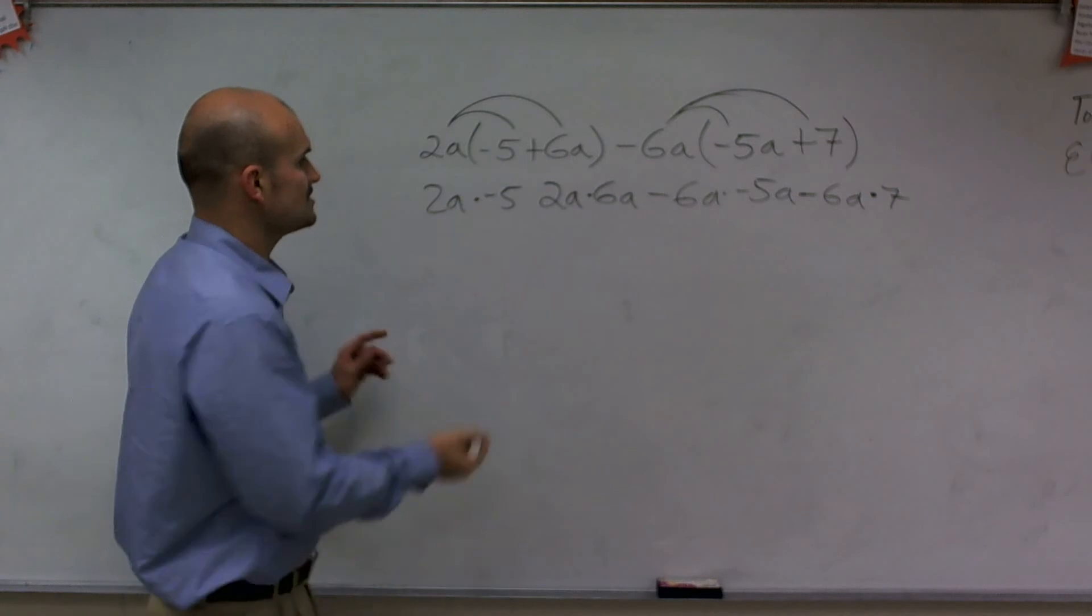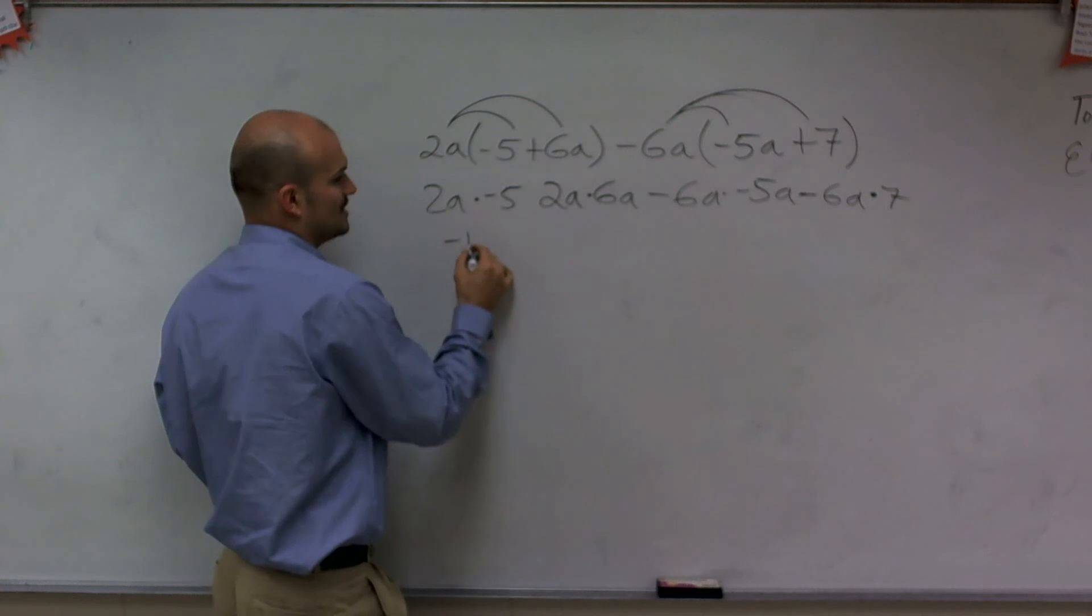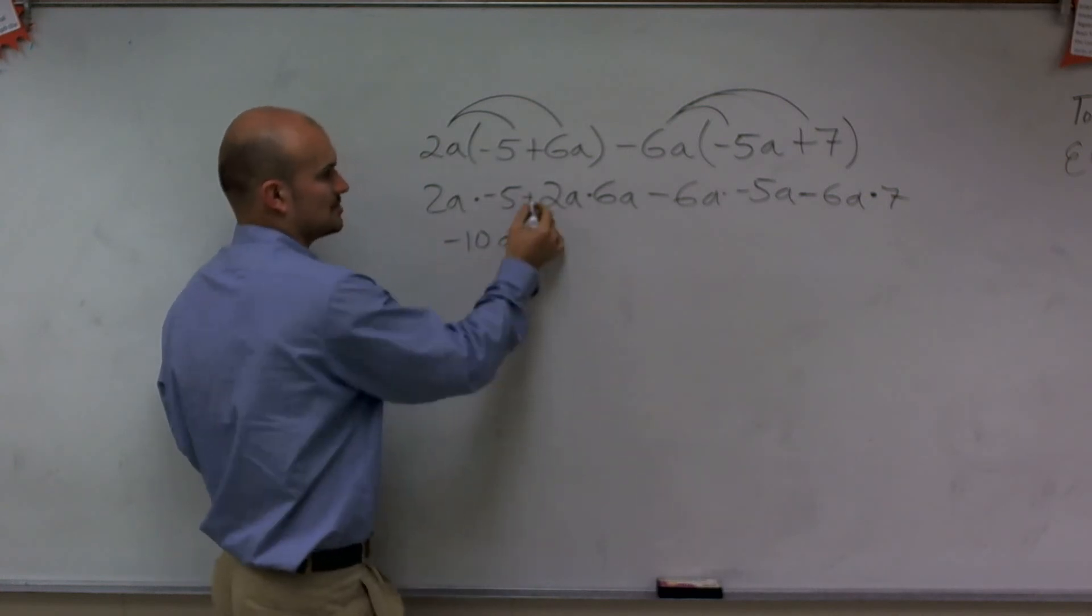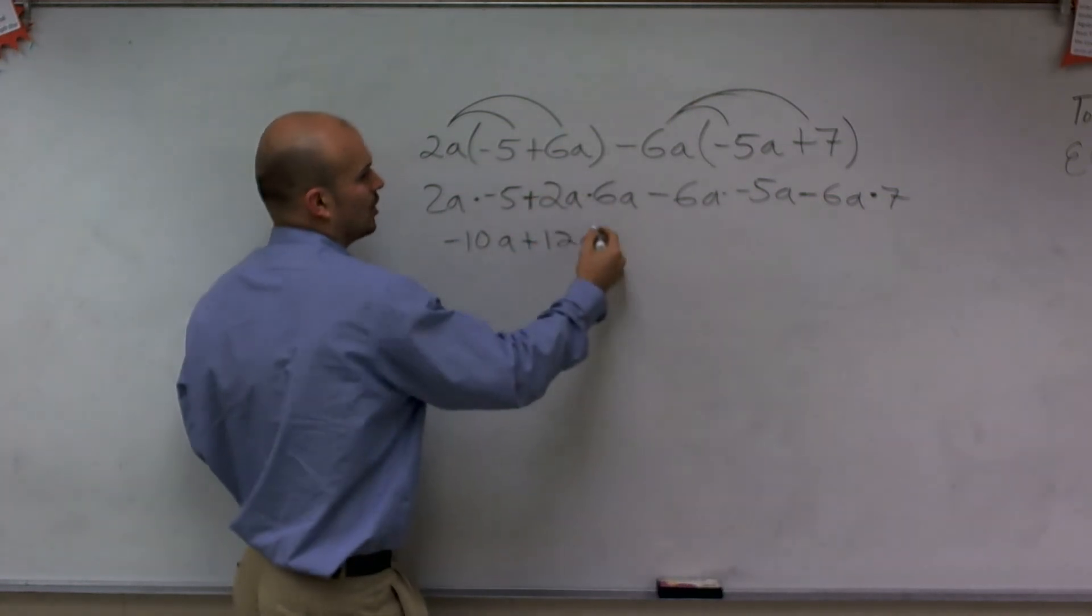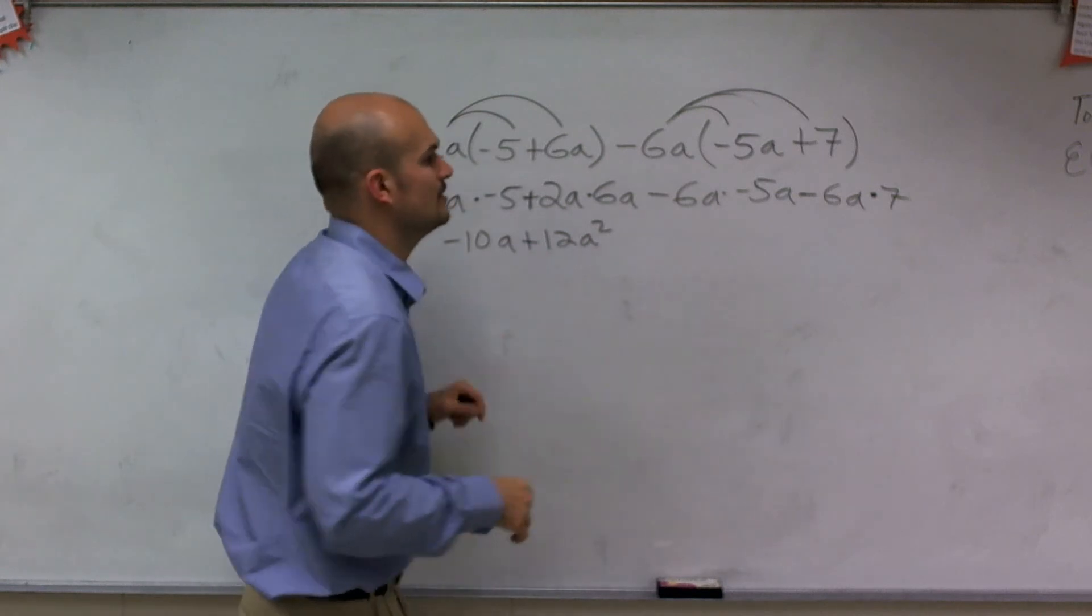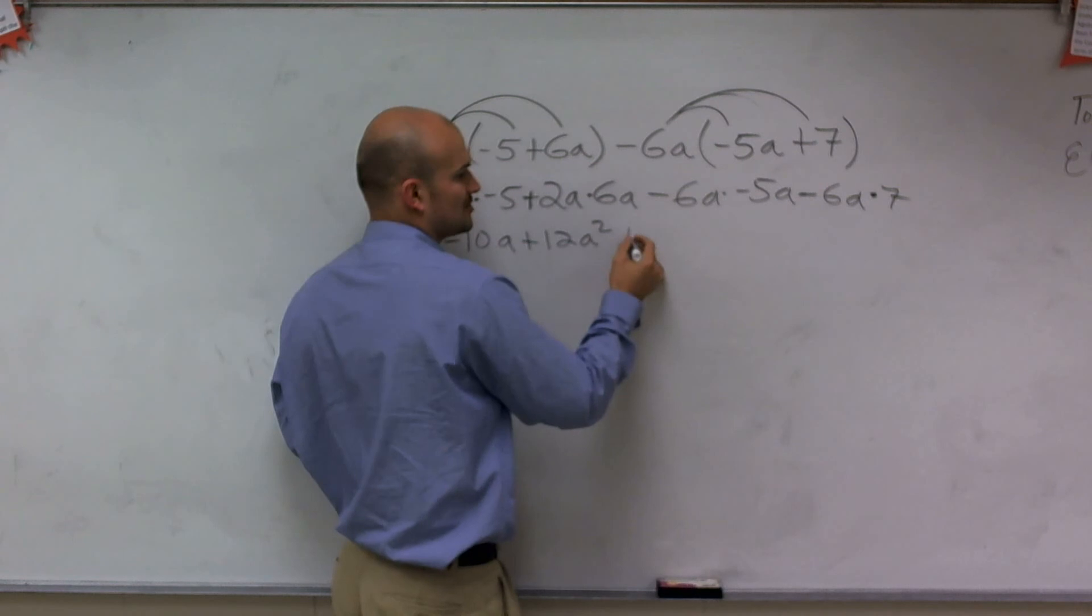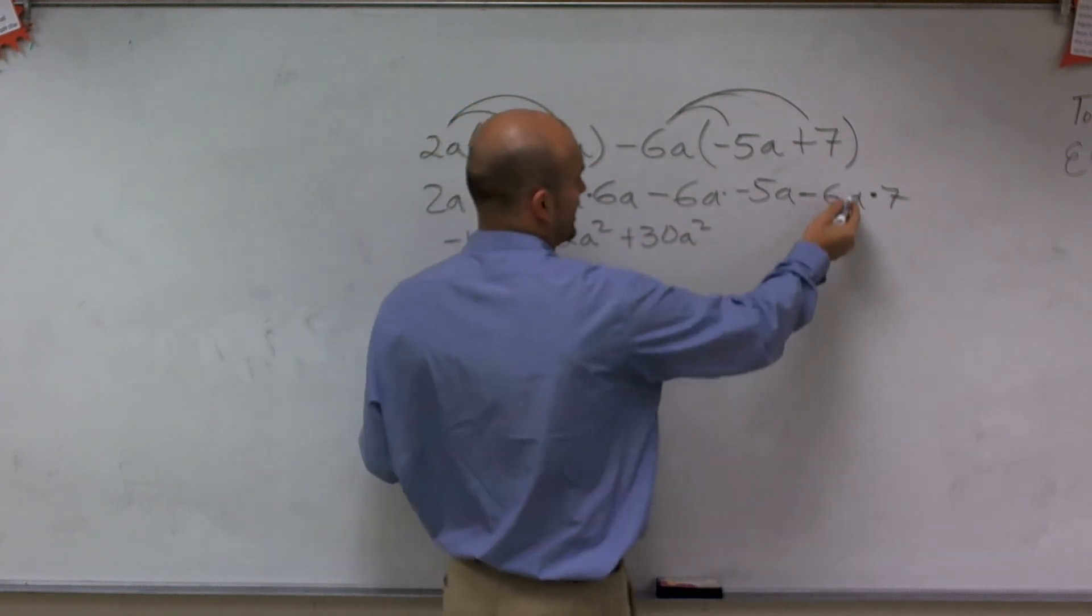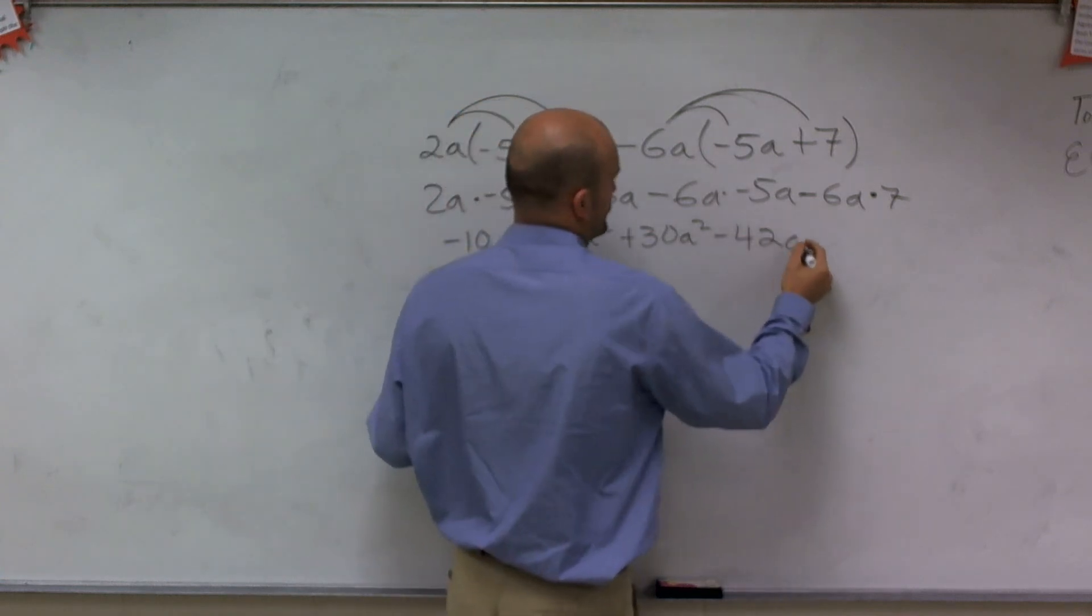So when completing this, when I multiply a number times a number with a variable, 2a times negative 5 is going to be negative 10a. And that's a positive 2a, so there's a plus there. 2a times 6a is going to be a positive 12a squared. Then negative 6a times negative 5a is going to be a positive 30a squared. And negative 6a times 7 is going to be a negative 42a.